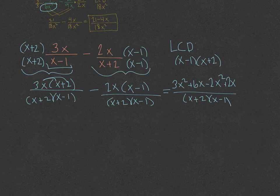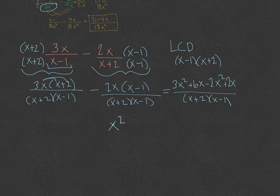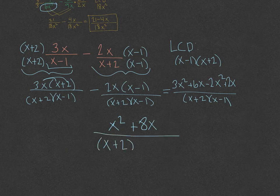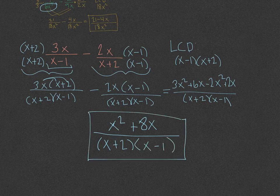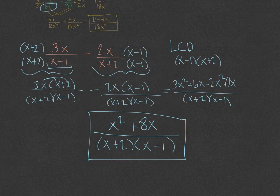The last thing we want to do is some basic simplification. 3x squared minus 2x squared is x squared, and 6x plus 2x is plus 8x, over our denominator x plus 2 times x minus 1. And there we have it — that is our final answer: x squared plus 8x all over x plus 2 times x minus 1.